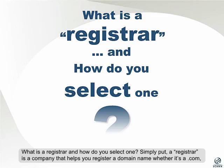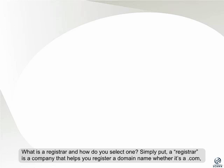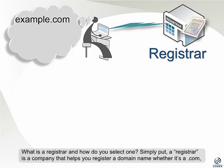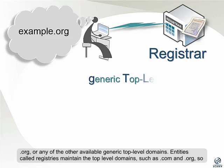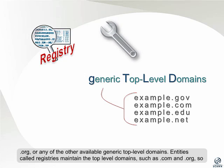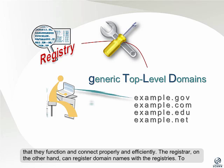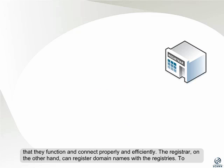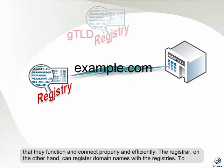What is a registrar and how do you select one? Simply put, a registrar is a company that helps you register a domain name, whether it's a .com, .org, or any of the other available generic top-level domains. Entities called registries maintain the top-level domains, such as .com and .org, so that they function and connect properly and efficiently. The registrar, on the other hand, can register domain names with the registries.